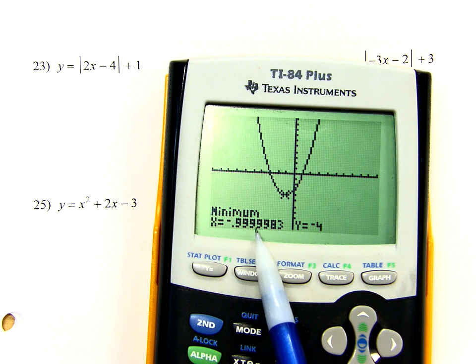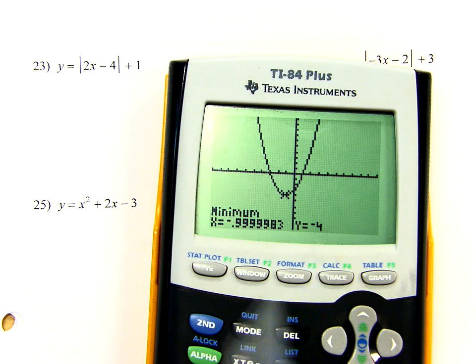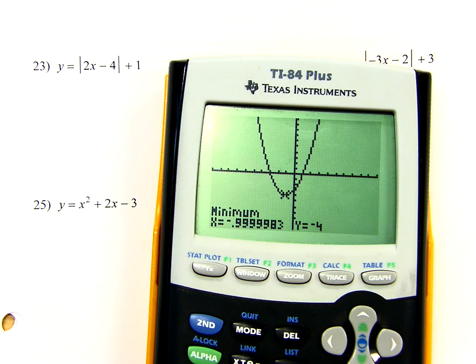So again, that's just going to be negative 1, comma, negative 4. So to find that max or min, it's the same way, whether it's absolute value or parabolas. The parabolas have a minimum point, even though they're a curve? Uh-huh. Okay.